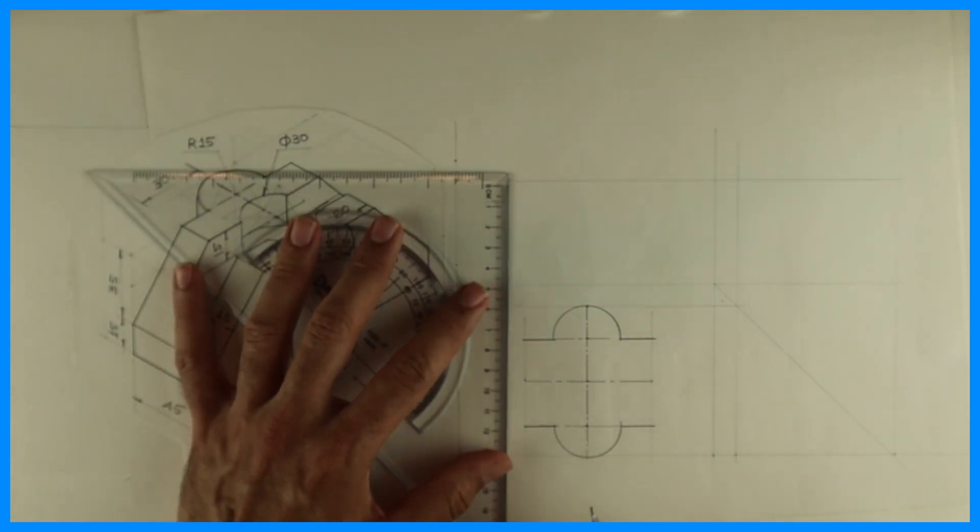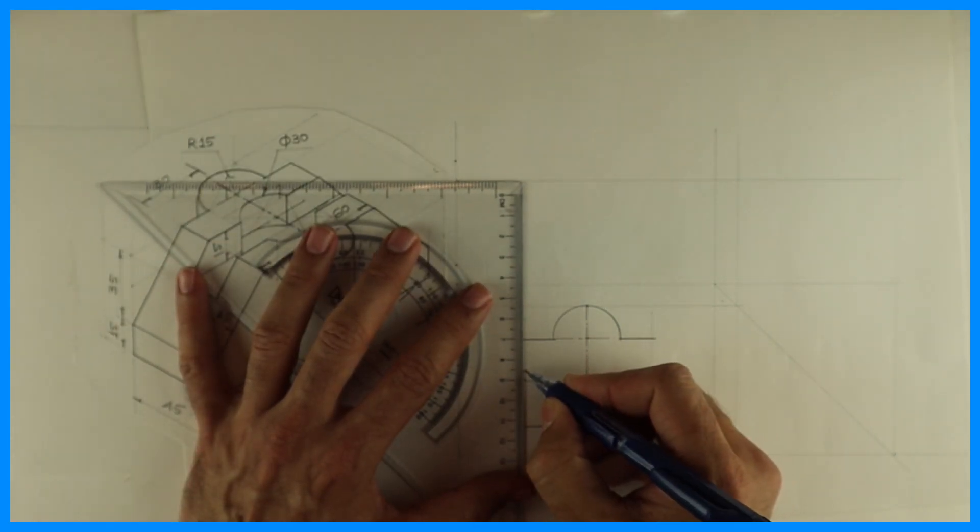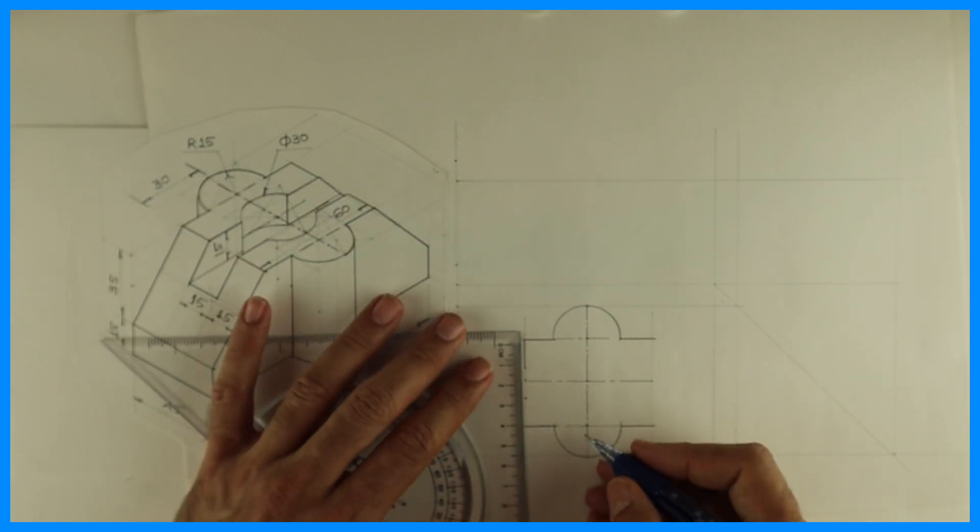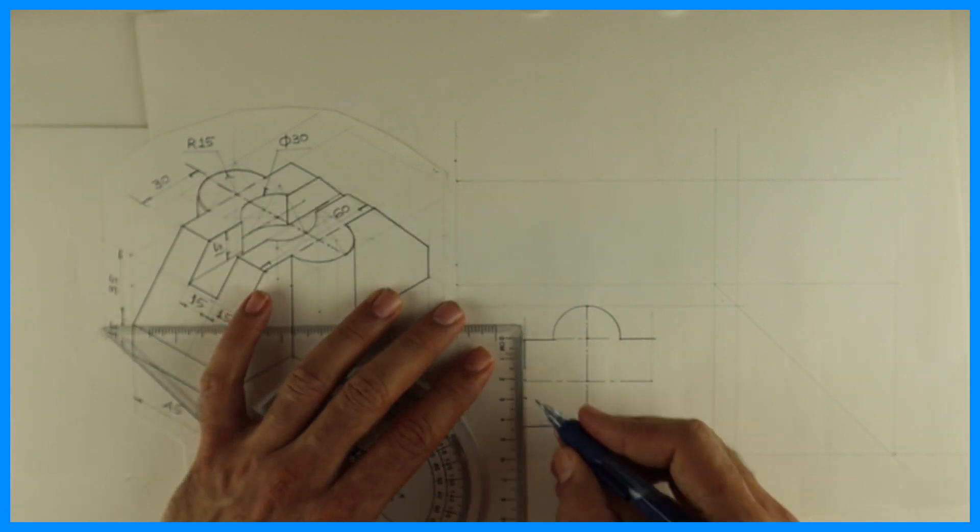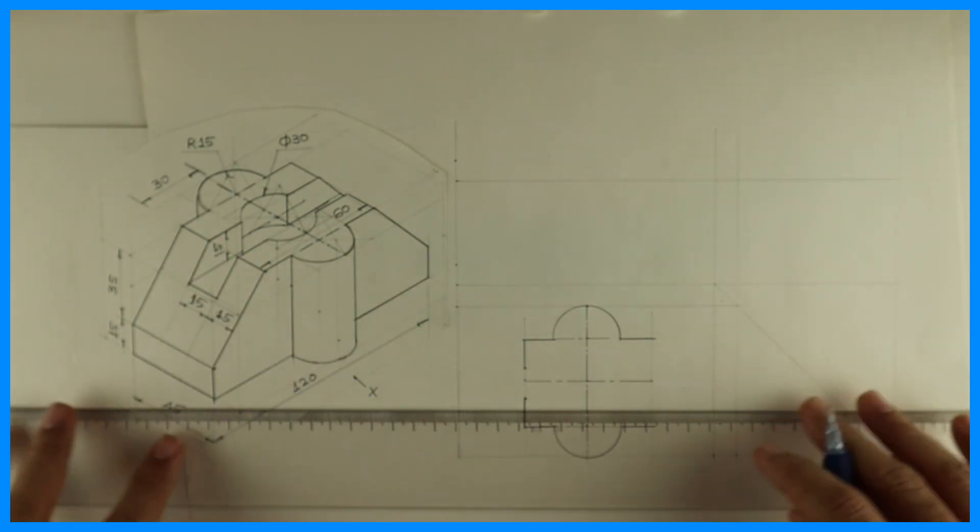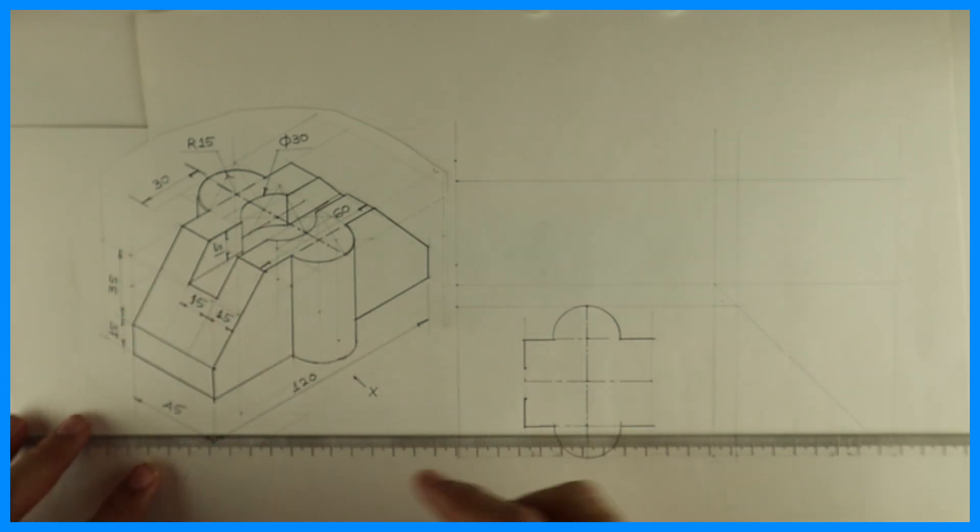Then you take 60, so you take 30-30 on both the sides. Then we'll draw this part. We'll take mark 15-15.